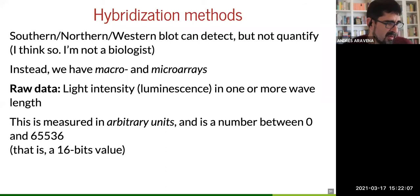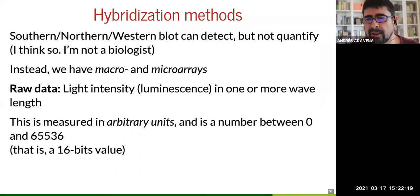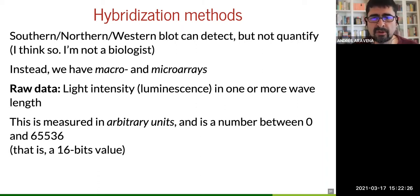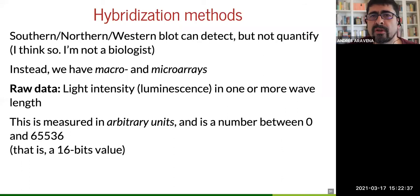The next concept is southern, northern, western, and eastern blots, which were initially done just for detecting amplified things — you would see a spot or not. This eventually evolved into macro arrays and micro arrays. Do you know the story of why they are called southern, northern, and western blots?